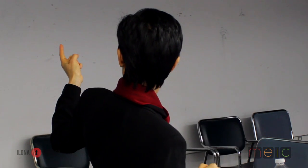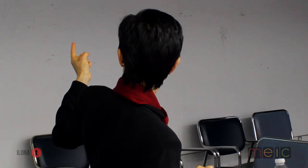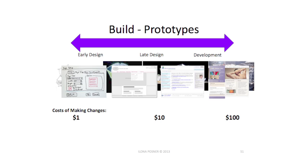And now finally we actually have the building — this is the Los Angeles Disney Concert Hall. In software we have our early mock-ups, wireframes, and then we start getting higher and higher fidelity as we go. The beautiful thing about this is the $1, $10, and $100 cost of making changes.